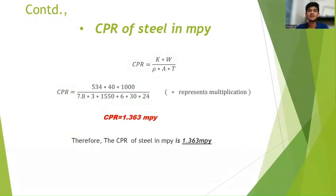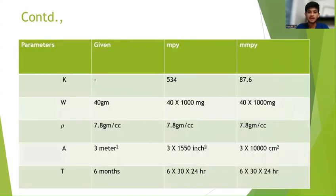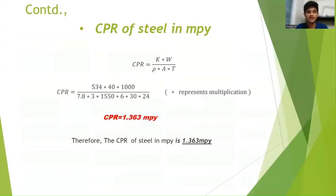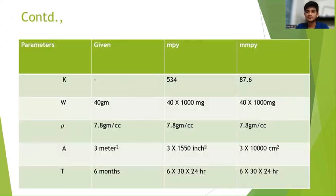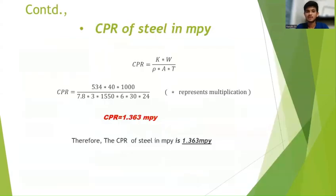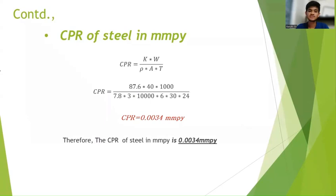Now let us calculate the CPR of steel in MPY. Using the formula CPR = K × W / (ρ × A × T) and entering the MPY values, we get CPR = 1.363 MPY. Therefore, the CPR of steel in MPY is 1.363 MPY, where the star represents multiplication. Now let us calculate the CPR of steel in MMPY. Entering the MMPY column data into the formula, we get CPR = 0.0034 MMPY. Therefore, the CPR of steel in MMPY is 0.0034 MMPY.